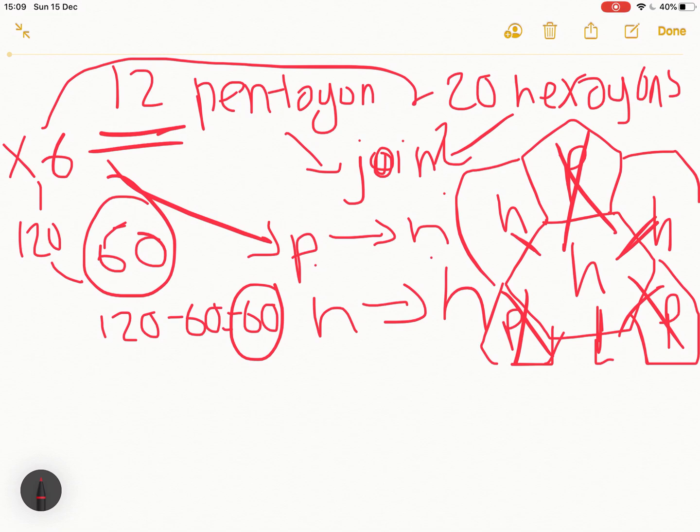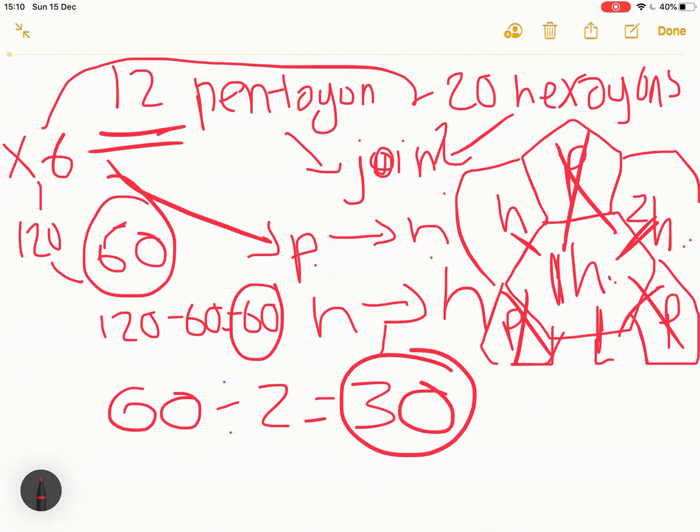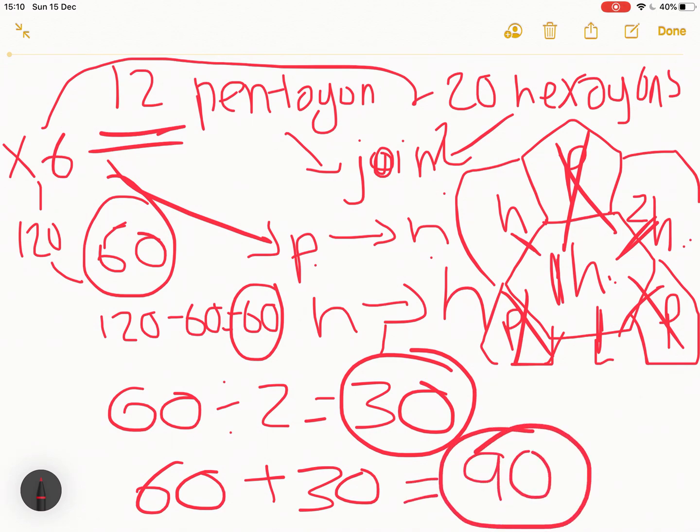However, some of these joins are double counted because if we have hexagon 1 here and hexagon 2 here, these joins are with hexagon 1 to hexagon 2 and hexagon 2 with hexagon 1. So we have to do 60 divided by 2 to get 30, which are the total hexagon to hexagon joins. So we do 60 plus 30 giving us the total number of joins, which is 90.